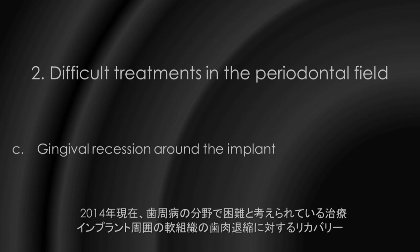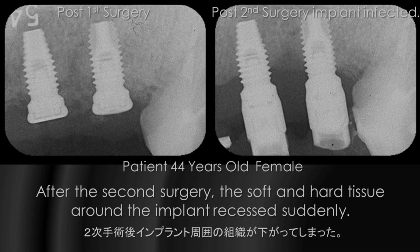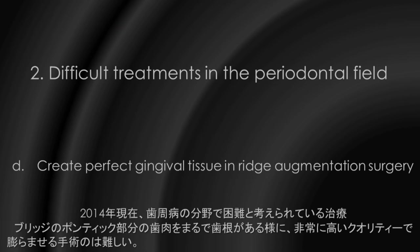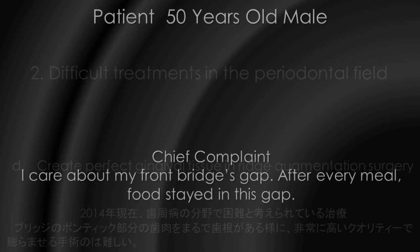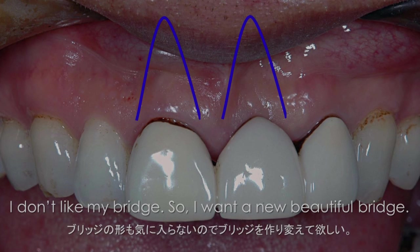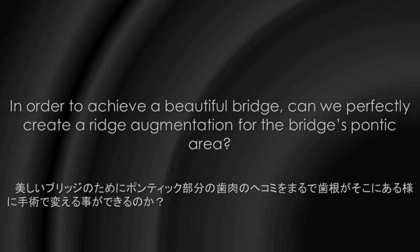Gingival recession around the implant. After the second surgery, the soft and hard tissue around the implant recessed suddenly. The recovery for an implant is very difficult, especially in the aesthetic area. Creating perfect gingival tissue in ridge augmentation surgery. The chief complaint was: 'I care about my front bridge gap — after every meal, food stays in this gap. I don't like my bridge, so I want a new beautiful bridge.' In order to achieve a beautiful bridge, can we perfectly create a ridge augmentation for the bridge pontic area?